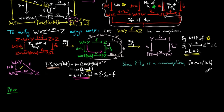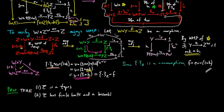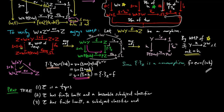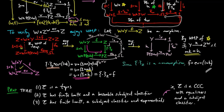We can now show the following are equivalent: (1) E is a topos; (2) E has finite limits and a baseable sub-object classifier; and (3) E has finite limits, a sub-object classifier, and exponentials. Number three is equivalent to E being a cartesian closed category with equalizers and a sub-object classifier, which is often the way a topos is defined in the literature.